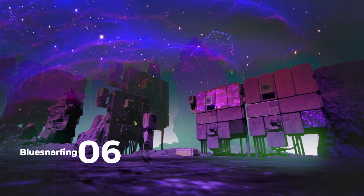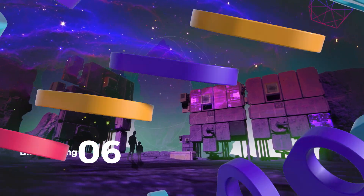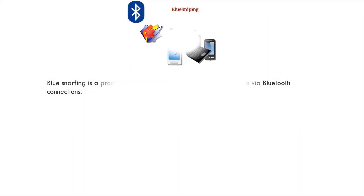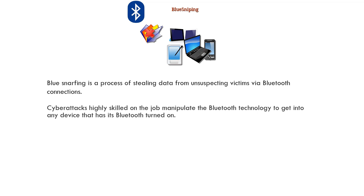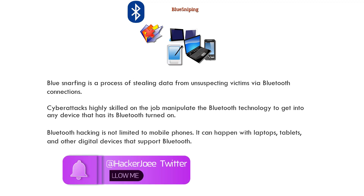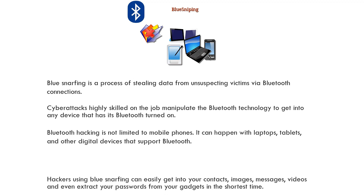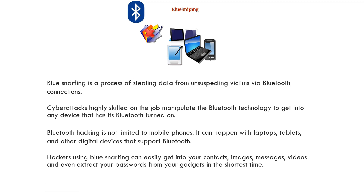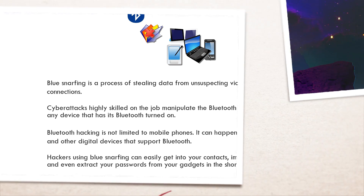The sixth is blue snarfing. Blue snarfing is a process of stealing data from unsuspecting victims via Bluetooth connections. Highly skilled cyberattackers manipulate Bluetooth technology to get into any device that has its Bluetooth turned on. Bluetooth hacking is not limited to mobile phones — it can happen with laptops, tablets, and other digital devices that support Bluetooth. Hackers using blue snarfing can easily access your contacts, images, messages, videos, and even extract your passwords from your gadgets in a very short time.